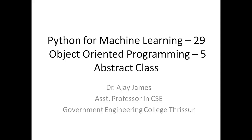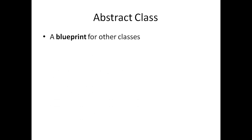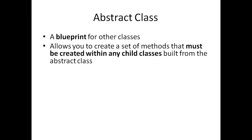In this lecture we will see about abstract class. An abstract class is actually a blueprint for other classes. We will declare some methods in the class and these methods should be implemented in its subclasses. This happens because we want to declare some mandatory methods that should be there in the child classes. It allows you to create a set of methods that must be created within any child classes built from the abstract class.